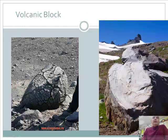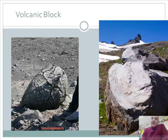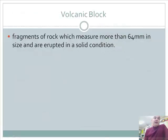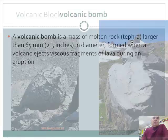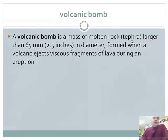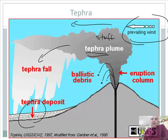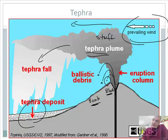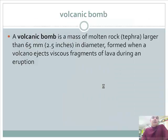Now, what about a volcanic block? It's bigger than a bomb — if this hits you, you would be done. Volcanic blocks are fragments of rock measuring more than 64 millimeters. The big ones travel the least distance because they're heavier. So blocks travel the shortest distance, then bombs travel further because they're smaller. If you're close enough to be hit by a block, you're probably already in serious trouble.